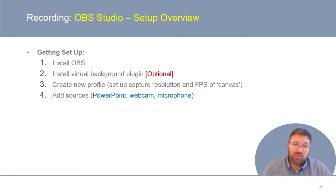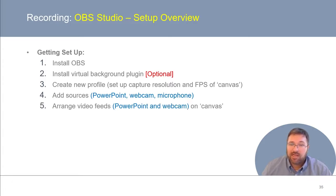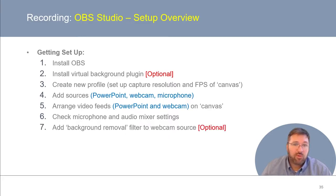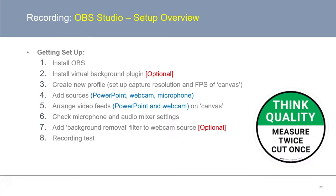Next, you're going to be adding your sources — in this case, PowerPoint, your webcam, and a microphone. Then you're going to arrange your video feeds, with PowerPoint and your webcam on your canvas. Next, you're going to check your microphone and audio mixer settings. Then you'll be adding your background removal filter to your webcam source — this is optional, but I recommend it. And lastly, perform a recording test.